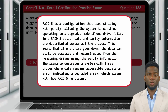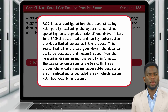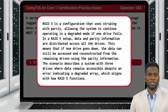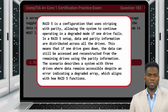RAID 5 is a configuration that uses striping with parity, allowing the system to continue operating in a degraded mode if one drive fails. In a RAID 5 setup, data and parity information are distributed across all the drives. This means that if one drive goes down, the data can still be accessed and reconstructed from the remaining drives using the parity information. The scenario describes a system with three drives where data remains accessible despite an error indicating a degraded array, which aligns with how RAID 5 functions.